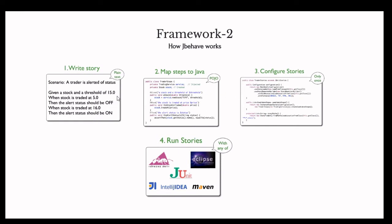Here you can see how we write a story file in Gherkin format in plain text English. For example: 'Scenario: trader is alerted of status. Given a threshold. When stock is traded at a price, alert status should be off. When the stock is traded at 16, alert should be on.' This is a basic scenario written in BDD format.